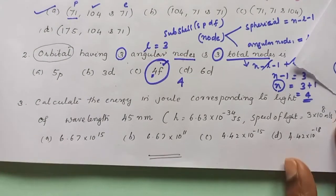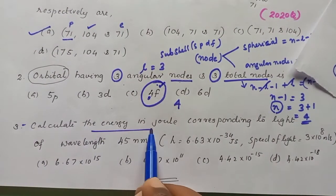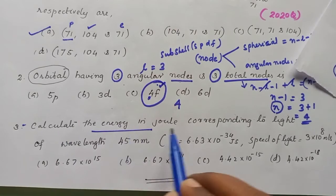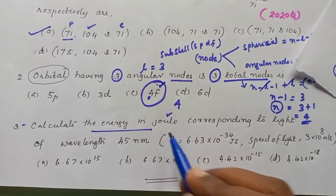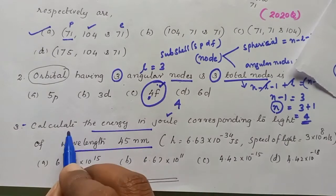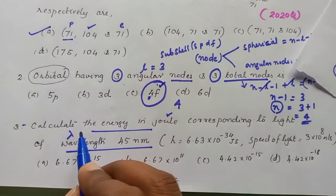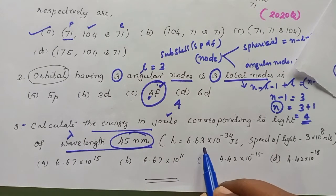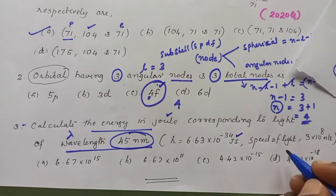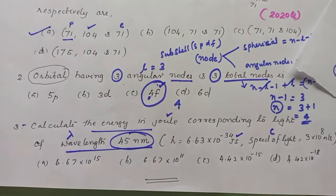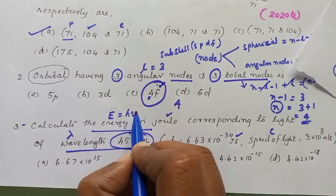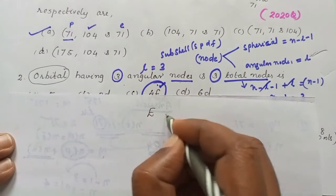The third question is related to energy. It is a calculation problem: calculate the energy in joules corresponding to light of wavelength lambda equal to 45 nanometers, given Planck's constant h equals 6.63 into 10 raised to minus 34 joule second, and speed of light C equals 3 into 10 raised to 8 meter per second. We use the energy equation E equals h times nu.